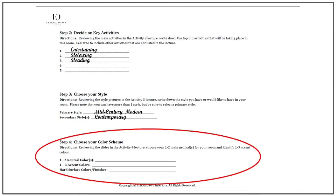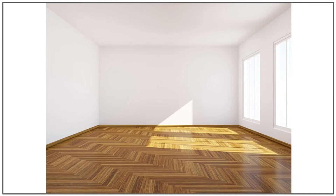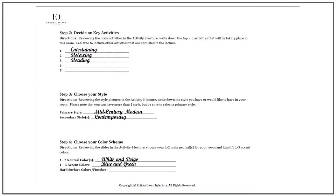Moving on to step four, choose your color scheme. I'm going to draw from the existing architecture and will be using white and beige as my neutrals, and blue and green will be my accent colors. I'll be using walnut for my wood finish, because nothing says mid-century modern like walnut does. And for my metal finishes, I'll be using a combination of brass and chrome.